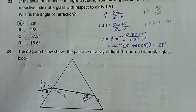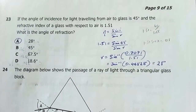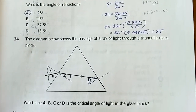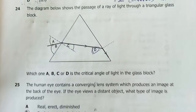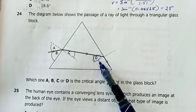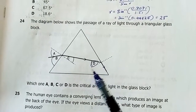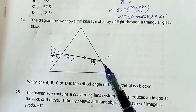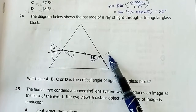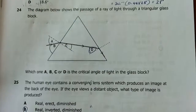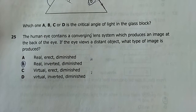Question 24: A ray of light passes through a triangular glass block. The critical angle is taken inside the more dense material at the angle where refraction is 90° to the normal. Our answer is D.